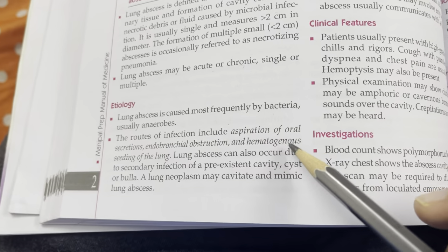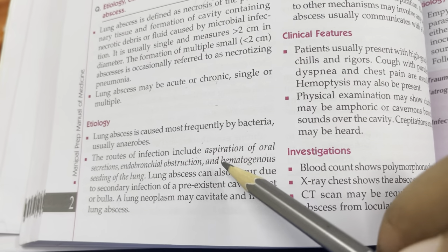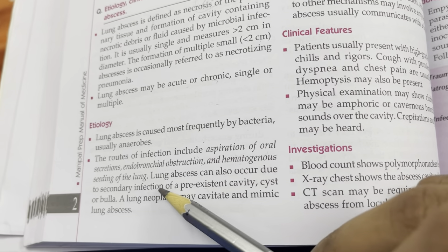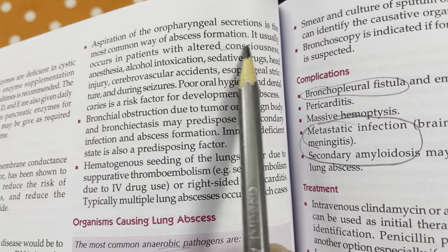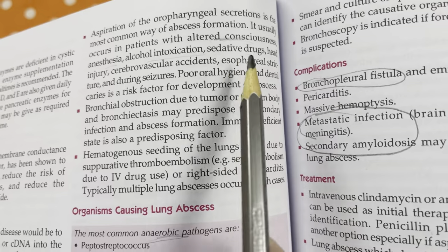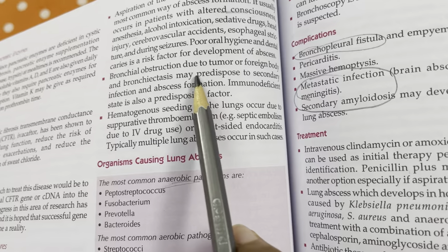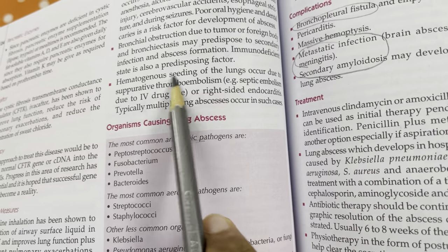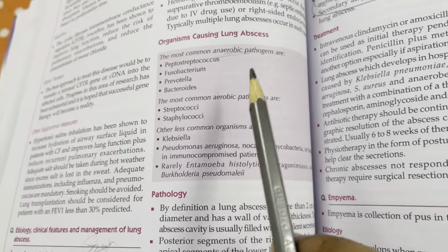Routes of infection for lung abscess: aspiration of oral secretions (most common — occurs in patients with altered consciousness, anesthesia, alcoholics, sedative drugs; poor oral hygiene and dental caries are risk factors), endobronchial obstruction causing stasis and infection, and hematogenous seeding. Immunodeficiency is also a risk factor. Aerobic pathogens (Streptococcus, Staphylococcus) can cause multiple lung abscesses.